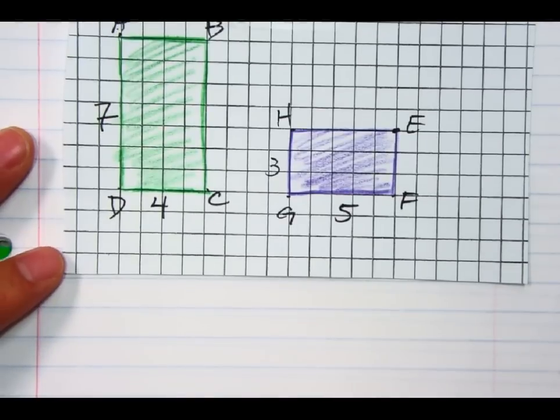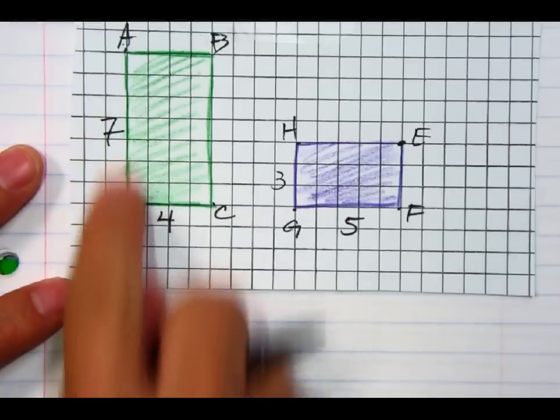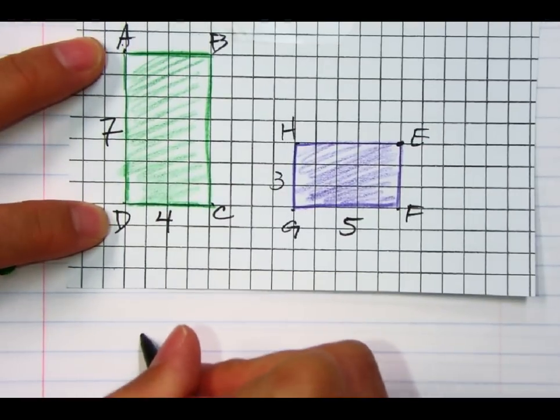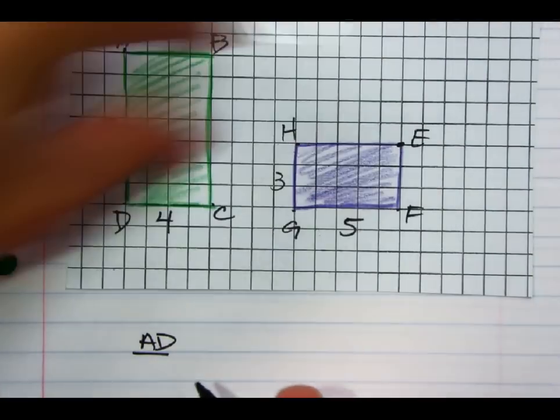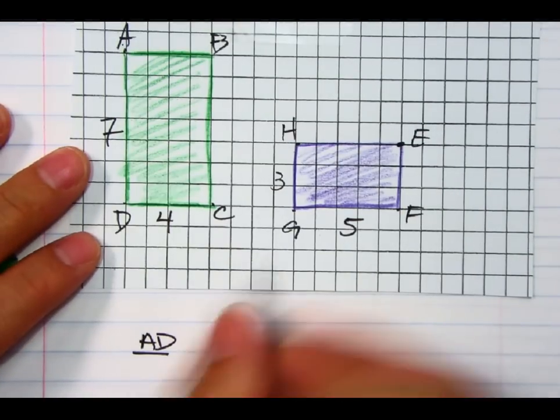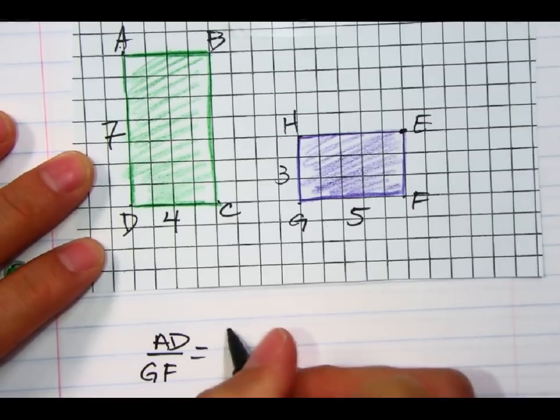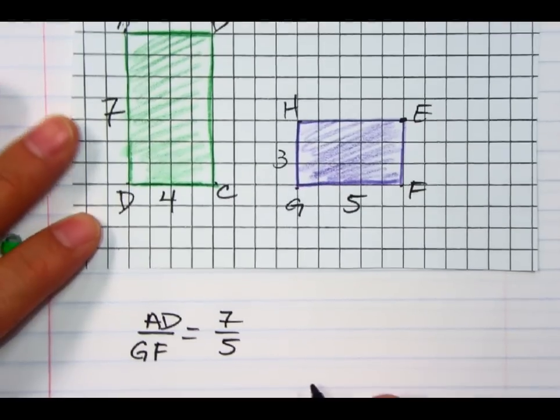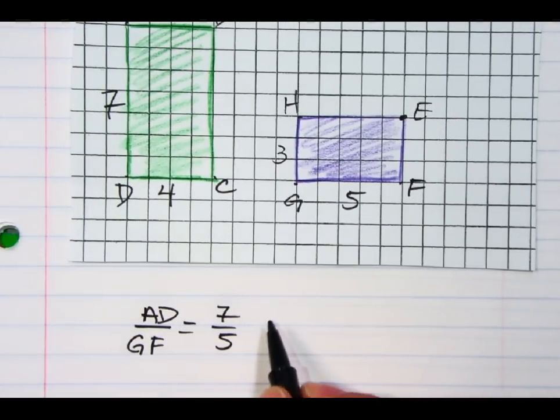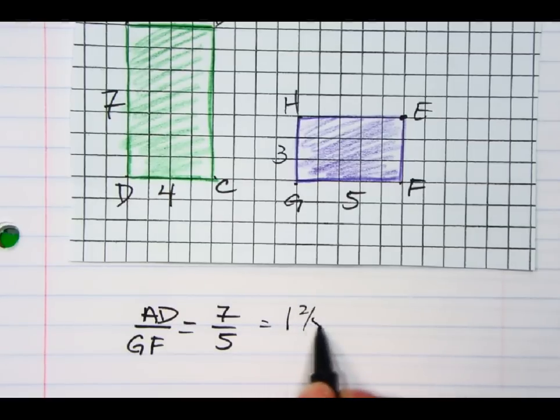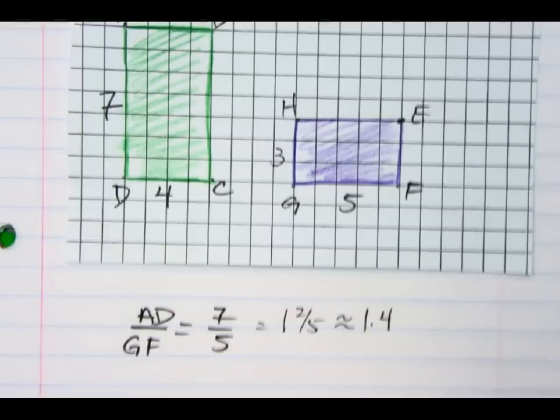All right, so what I want to do is I want to compare. I want to see if this is going to be similar or not. So I'm going to start with the longest side. I'll start with this larger rectangle. That's A to D. I want to compare that to the longest side on this one. Now notice, it almost looks like it got rotated, so I'm going to compare that to, let's say, G to F here. Okay, so I want to see 7 over 5. Okay, so if I do 7 over 5, you know, I can go ahead and figure that out with a calculator if I want. I can say that that's 1 and 2 fifths, or as a decimal, that would be 1.4. Okay, so there's that comparison.